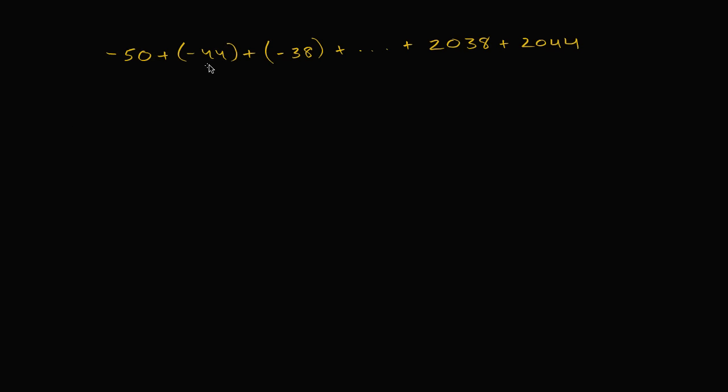So we have the sum negative 50 plus negative 44 plus negative 38 all the way, we keep adding all the way, we get to 2038 and then 2044. So see if you can pause this video and evaluate this sum.